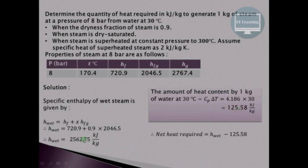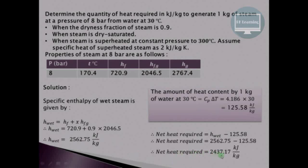The net heat required to be supplied is H_wet minus the heat already present in the water at 30°C. That value comes out to be 2437.17 kJ/kg. This represents the final enthalpy of the wet steam minus the initial enthalpy of the water at 30°C, giving the net heat required to raise the wet steam from water at 30°C.